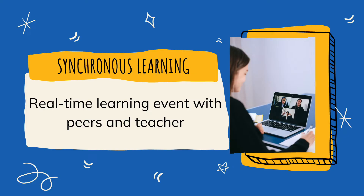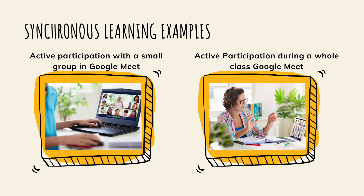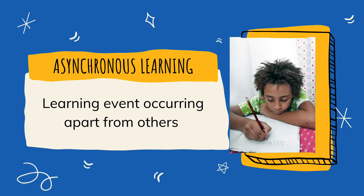Synchronous learning is a real-time learning event with peers and the teacher and involves active two-way interaction. Some examples of synchronous learning include your student's participation in Google Meets, either with the whole class or in small groups. Asynchronous learning is learning that occurs apart from others.